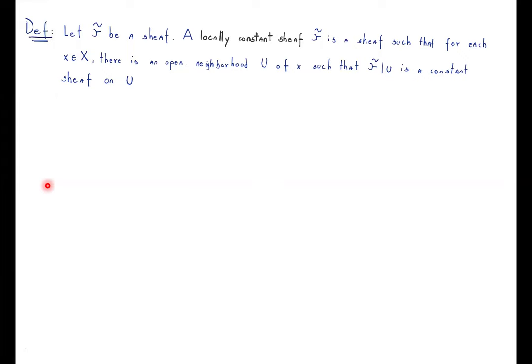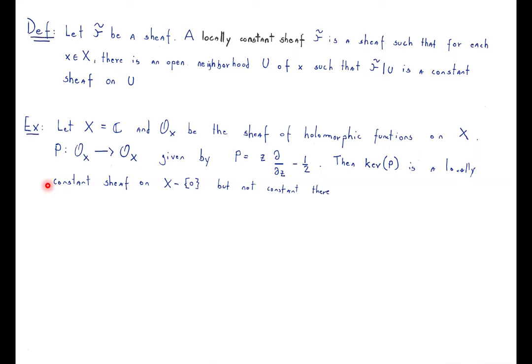Now we need the definition of a locally constant sheaf: it is a sheaf such that for each point we have an open neighborhood such that the restriction of our sheaf to that open is a constant sheaf. For example, if you pick X to be the complex numbers and take a sheaf of holomorphic functions, you can pick the differential operator d/dz, and the kernel is actually a locally constant sheaf on ℂ\{0}, but it's not constant there because you don't have a global section — we are trying to solve a differential equation.